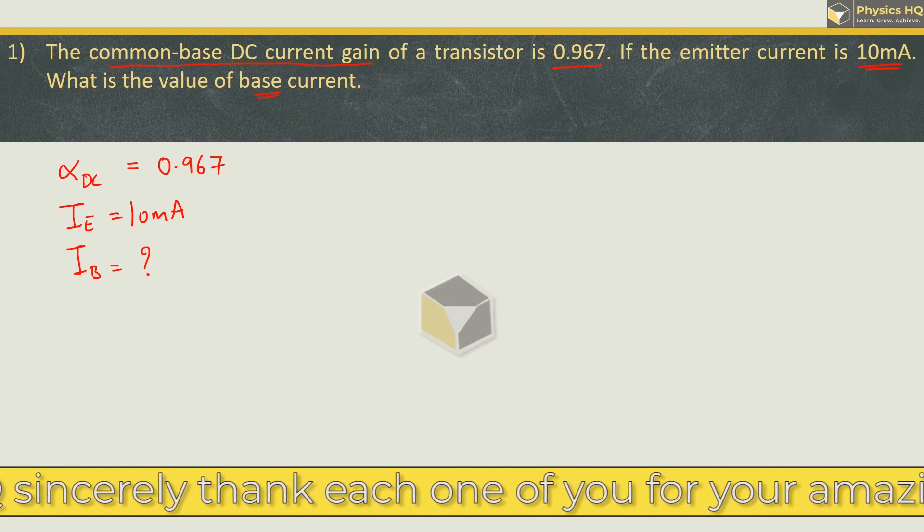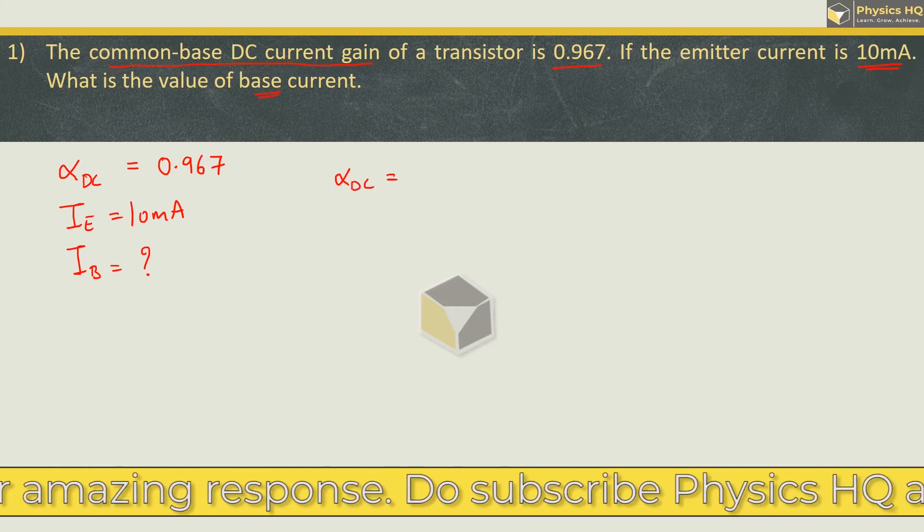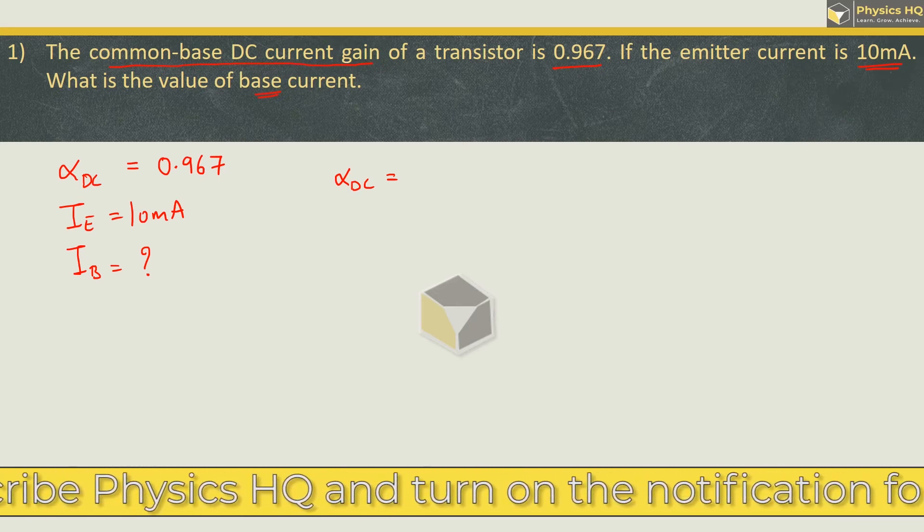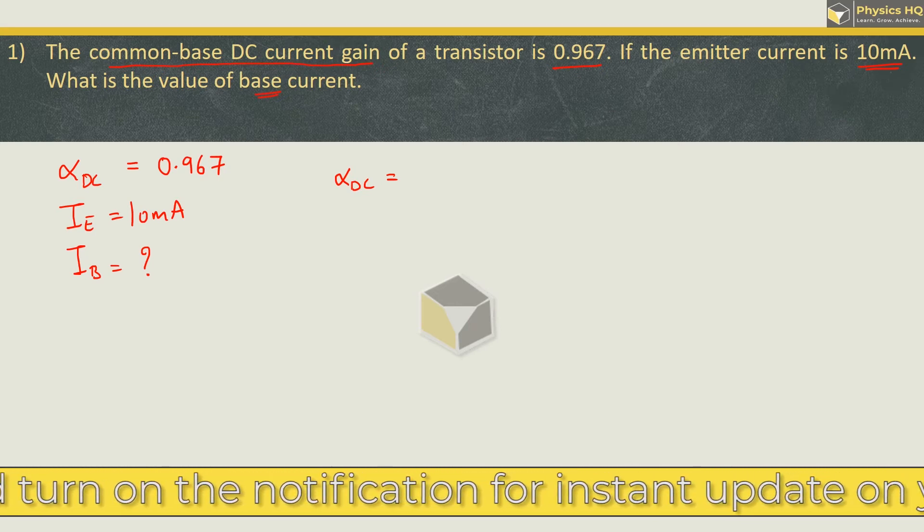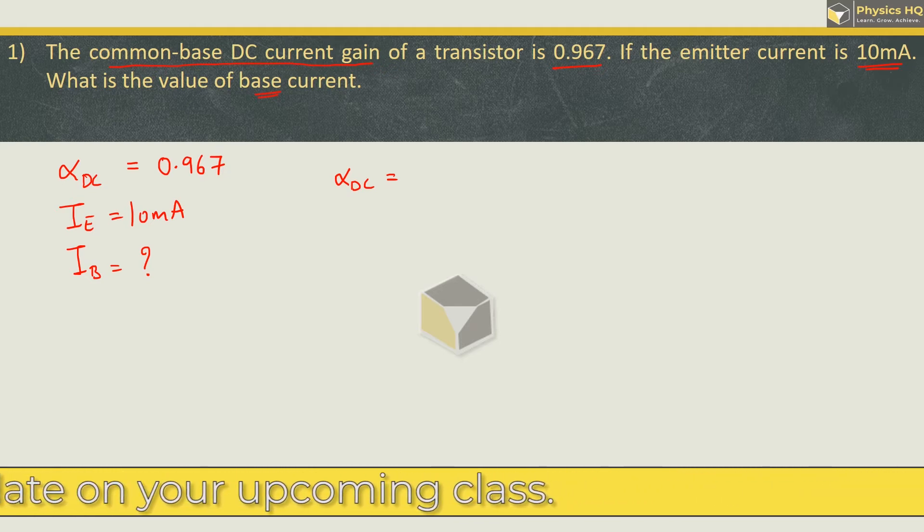For solving this, we will go ahead with the formula for alpha DC, which is the formula for common base DC gain. Gain is given as output upon input. Since it is current gain, it is output current upon input current.